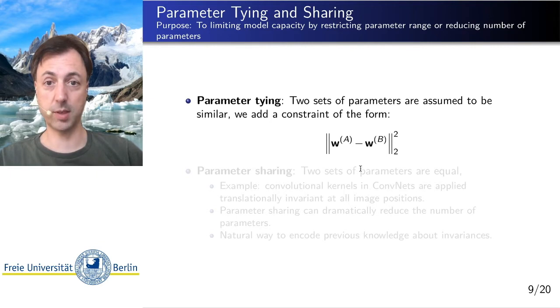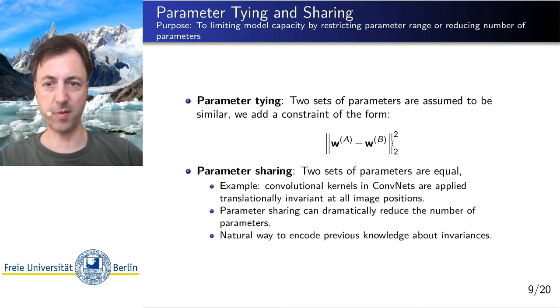So one thing we could do is if we train multiple copies of a model to try to make their parameters be similar. So to try to make them agree in parameter space. A more formal form of this sort of regularization is parameter sharing. And that we have seen before.